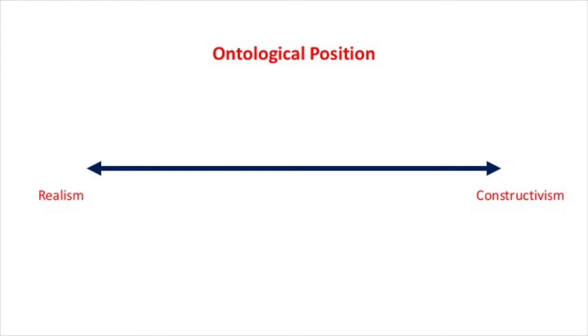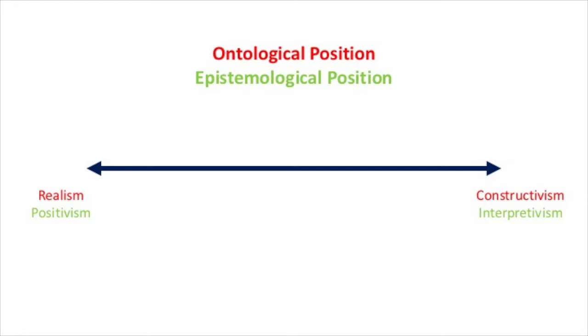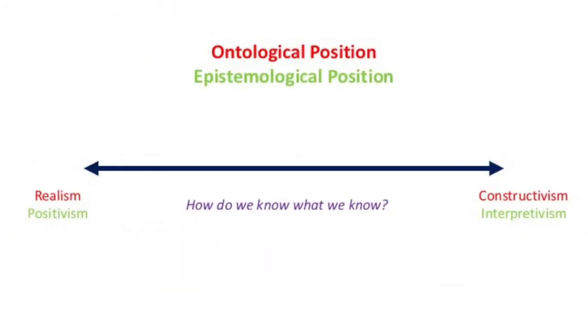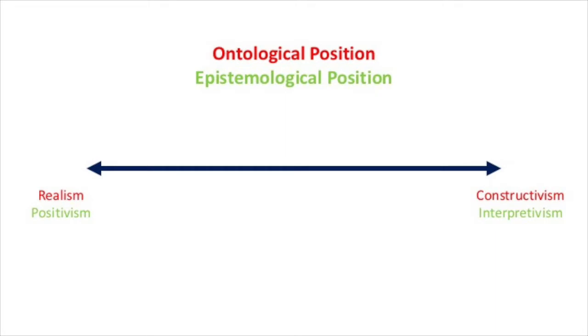The second assumption relates to epistemology, that is your position on the nature of knowledge. Your epistemological position makes assumptions about the relationship of knowledge to your ontology. A simple question would be: how do we know what we know? Your answer to this question reveals your assumptions about what you think knowledge is, what is evidence, what we should accept as valid knowledge about the social world.